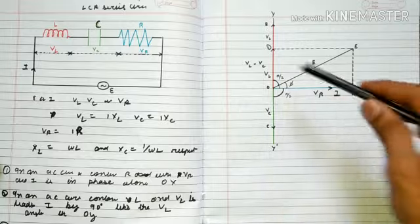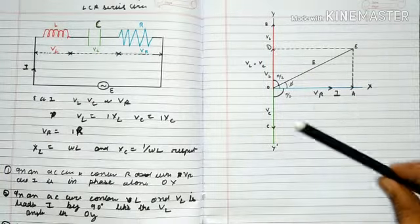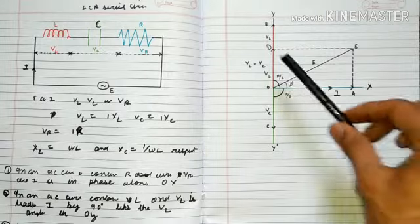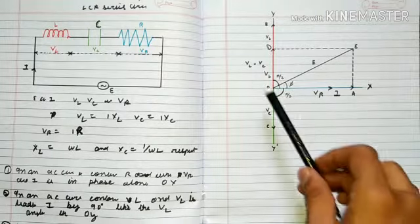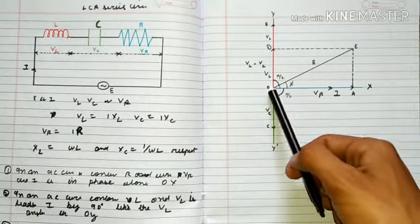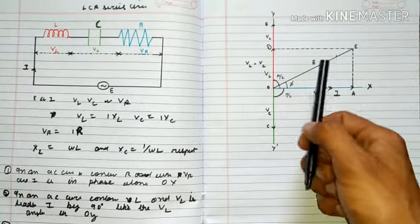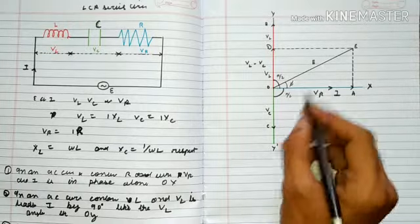For the LCR circuit phasor diagram, we find the resultant of OD and OE, which is E. We find this result using the Pythagorean theorem.